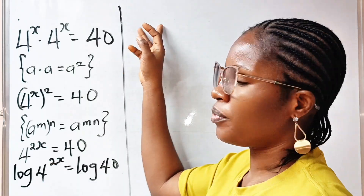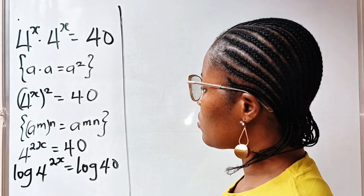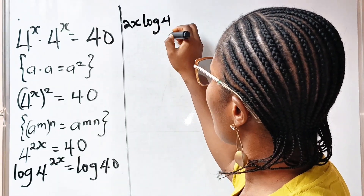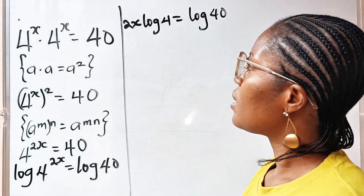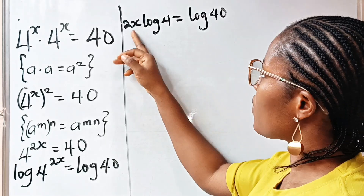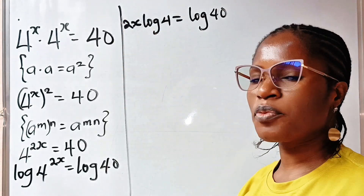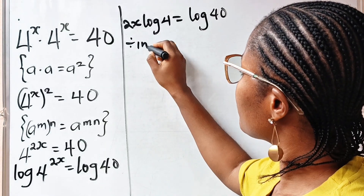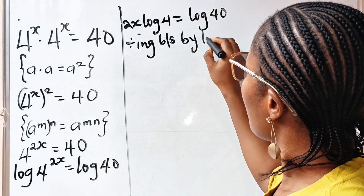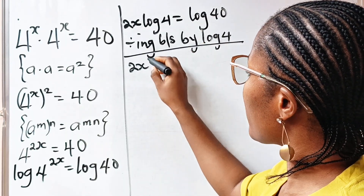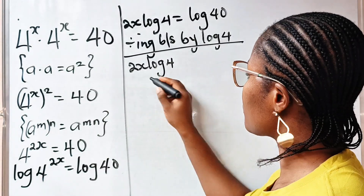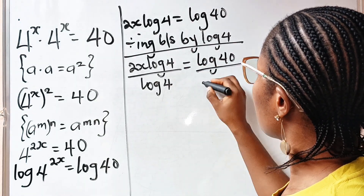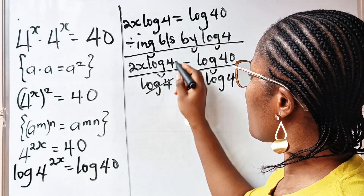Applying that law, the 2x comes down to multiply log 4, giving us 2x times log 4 equals log 40. Now, we are trying to find the value of x, so let's divide both sides by log 4. Log 4 divides itself to give 1, so we have 2x equals log 40 divided by log 4.